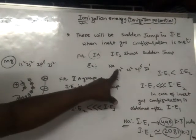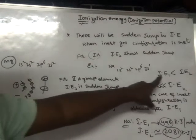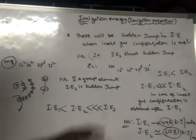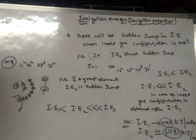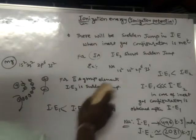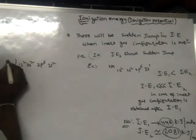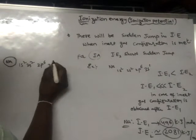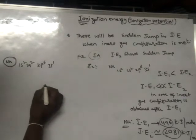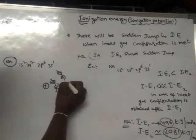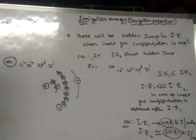Normally, when compared to the first ionization energy, the second ionization energy will be more. In the case of sodium, its electron arrangement is: first orbit has two electrons, second orbit has eight electrons, and the third orbit has one electron.